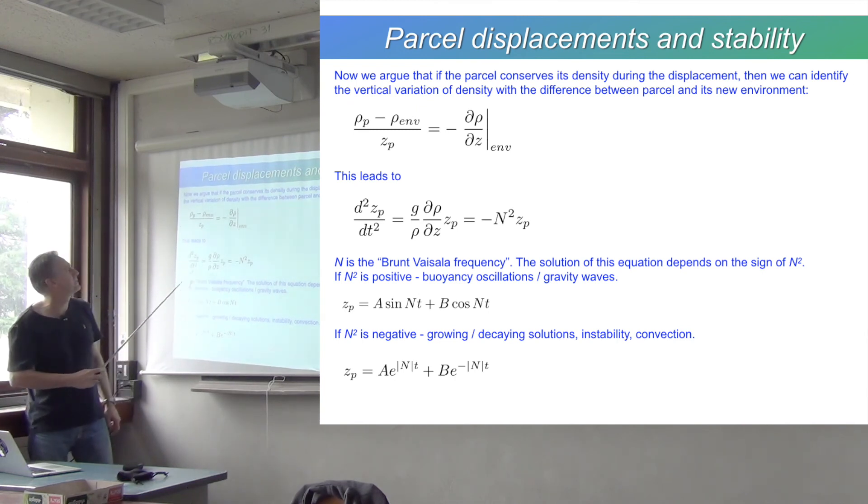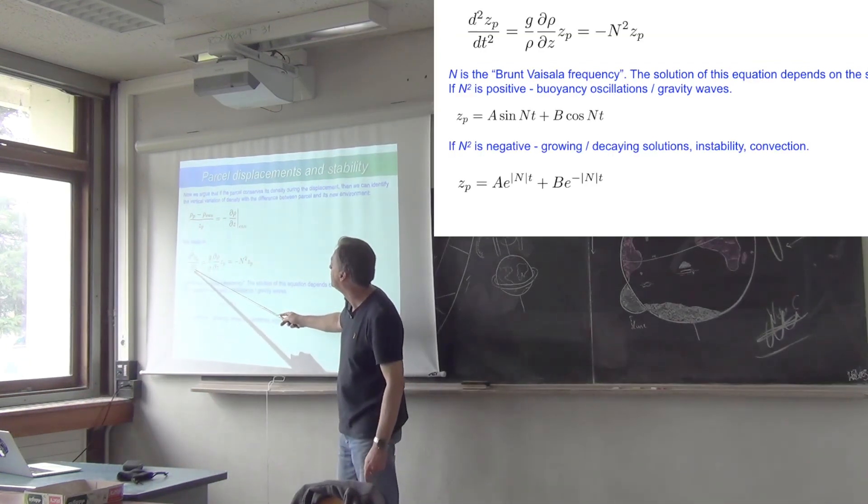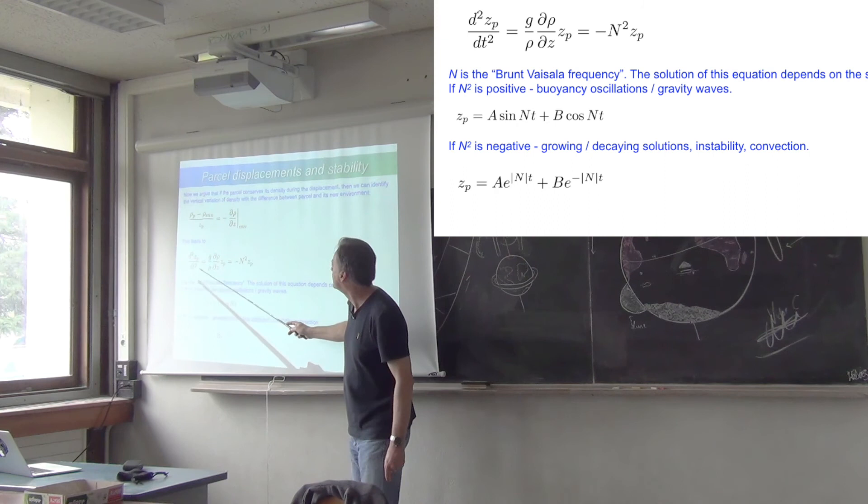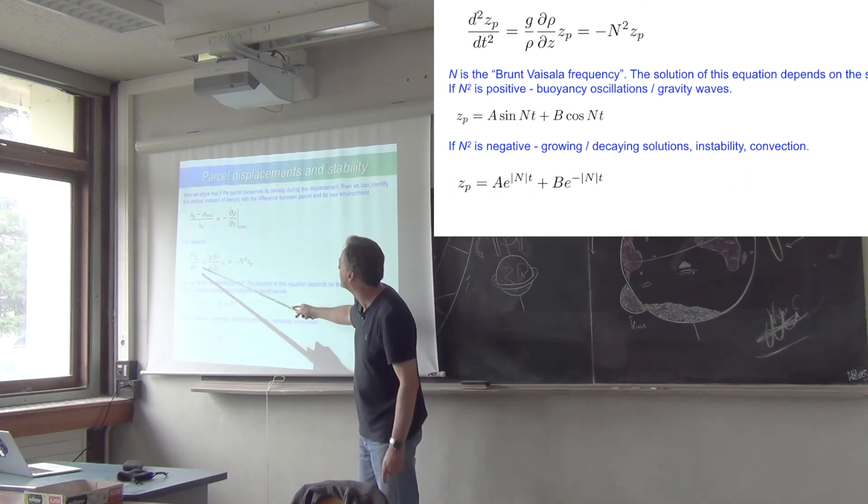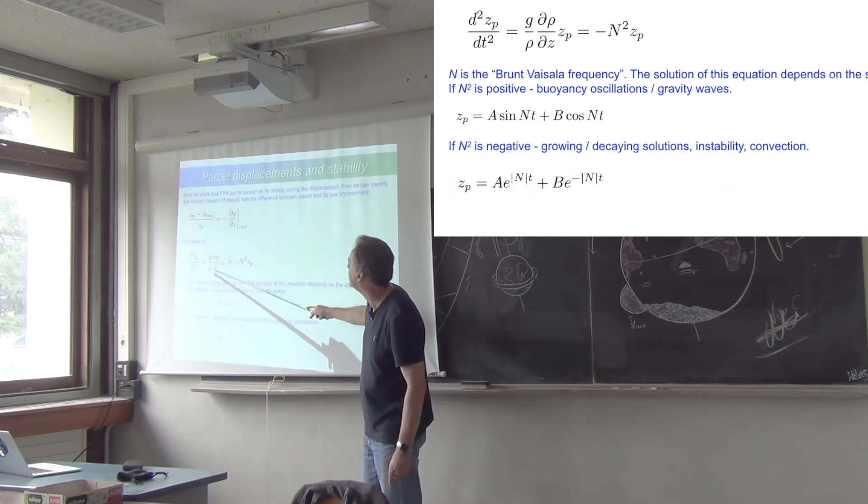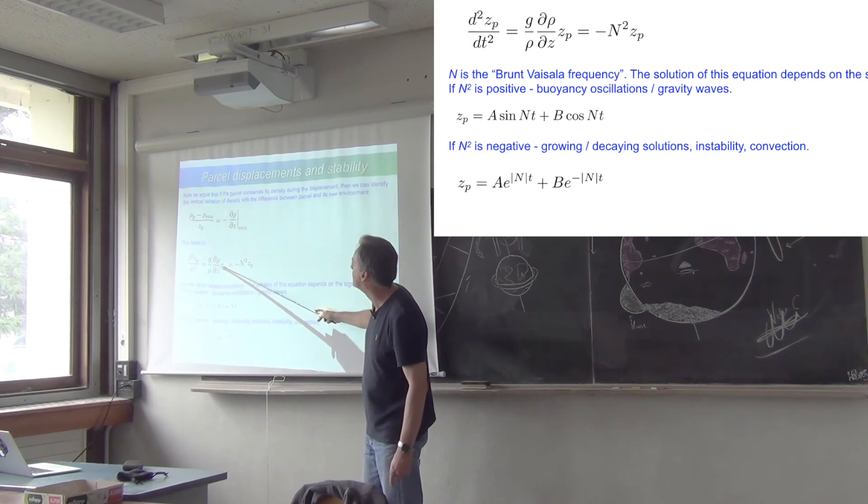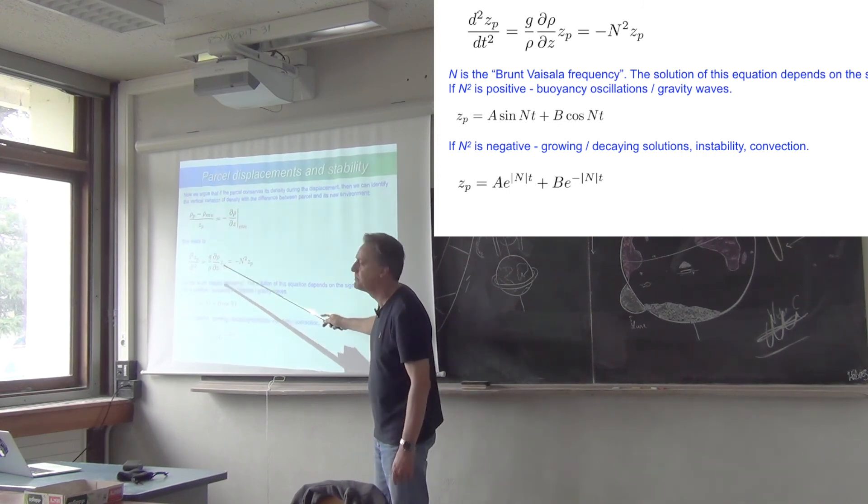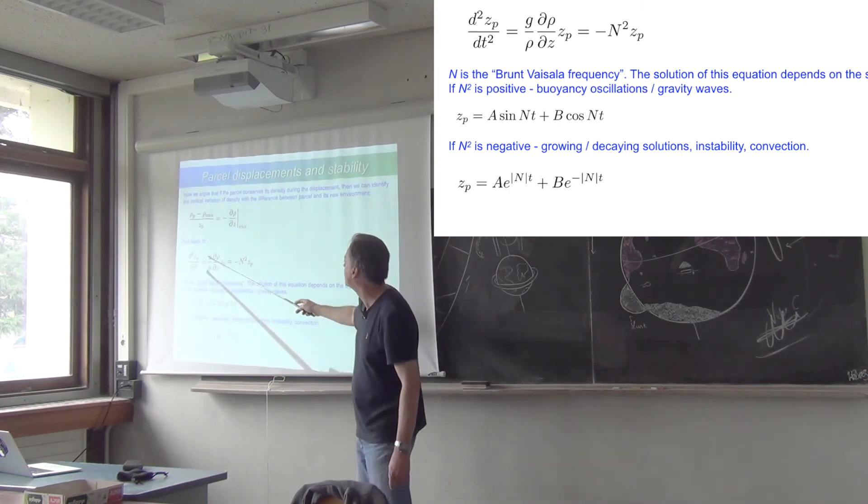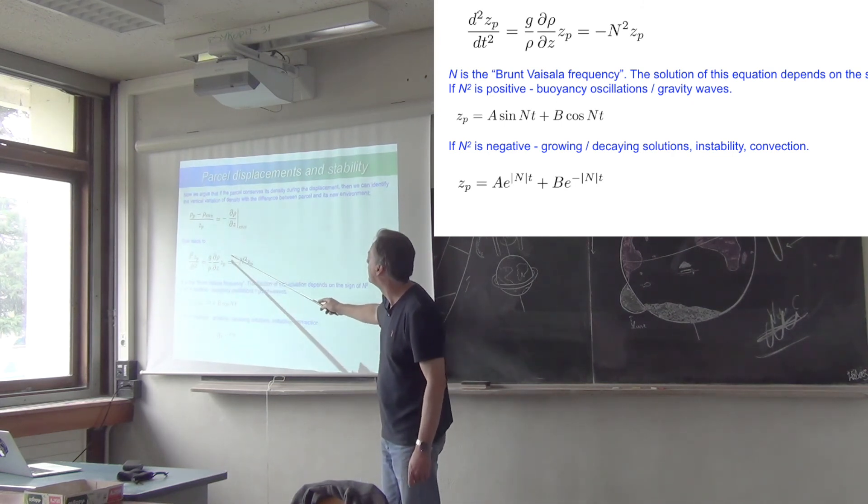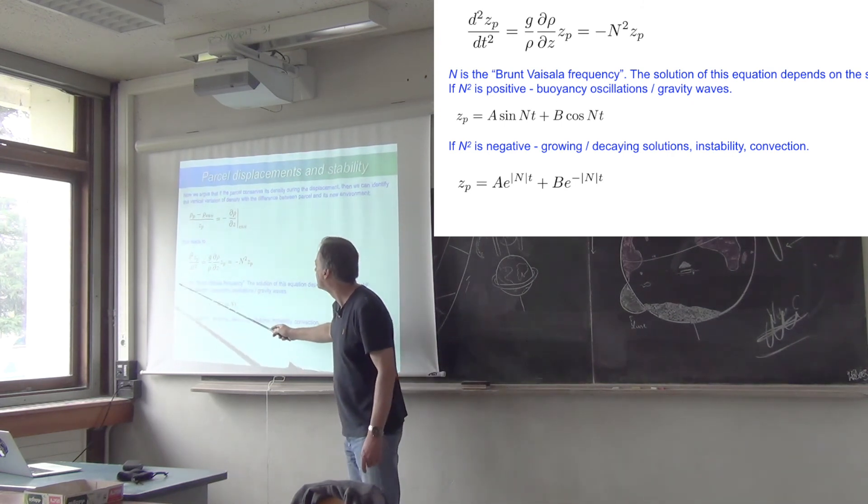We can plug that back into the equation and we get an equation for the vertical acceleration of the parcel: d²z_p/dt² equals now something which is entirely in terms of the environment, (g/ρ)(dρ/dz) times the position of the parcel. That's a kind of harmonic motion equation. This g/ρ dρ/dz is -N², where N is called the Brunt-Väisälä frequency.